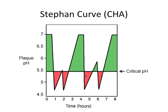To review quickly, what affects the Stephan curve? How often you eat and drink is perhaps the most obvious one. The more frequent the acid challenges, the more at risk you are for acid erosion of teeth. So the longer you wait between meals, the better.